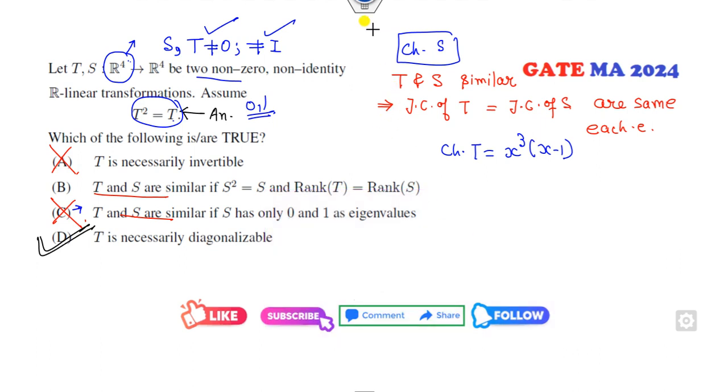Now look at the second option. S squared equals S, which means it is similar to T squared equals S. And S is non-zero and non-identity. That means S is also diagonalizable.